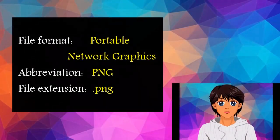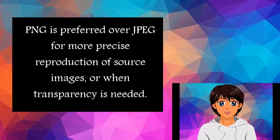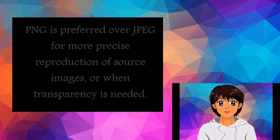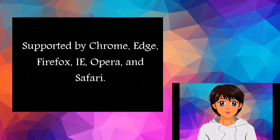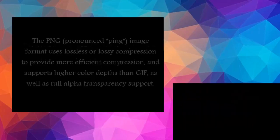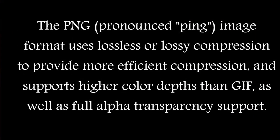Fifth, Portable Network Graphics (PNG) — PNG is preferred over JPEG for more precise reproduction of source images, or when transparency is needed. WebP and AVIF provide even better compression and reproduction, but browser support is more limited. Supported by Chrome, Edge, Firefox, IE, Opera, and Safari. The PNG format uses lossless or lossy compression to provide more efficient compression and supports higher color depth than GIF, as well as full alpha transparency support.